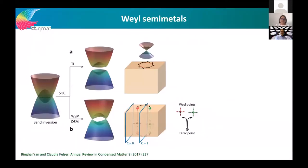Weyl semimetals are a kind of new class of materials related to topological insulators. In topological insulators, the conduction band and valence band are inverted — you see here on the left the conduction and valence bands overlapping, and depending on the symmetry of the material we can open up a band gap and get a topological insulator, which is insulating in the bulk and has topological projected surface states because of this band inversion.